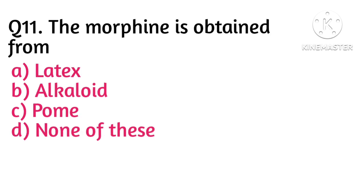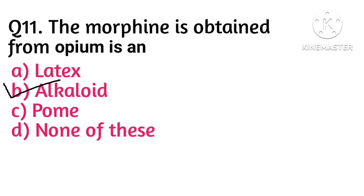Next question: morphine is obtained from opium — option B is correct. Morphine is an alkaloid obtained from opium.